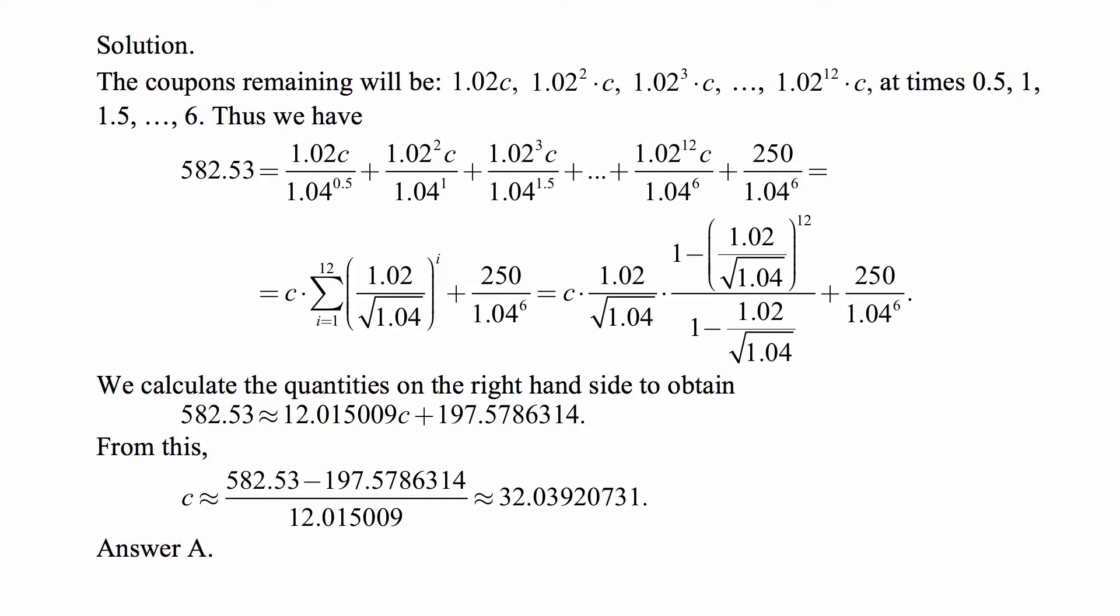We notice that the coefficient of c in the first expression is 1.02 divided by √1.04. The next coefficient is the square of the first coefficient, the next one is the cube of the first coefficient, and so on.